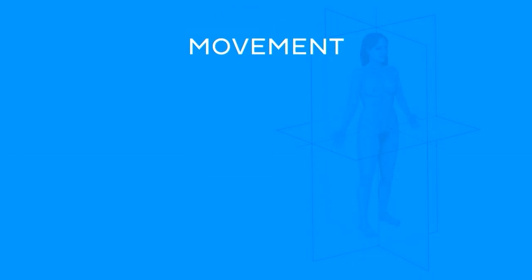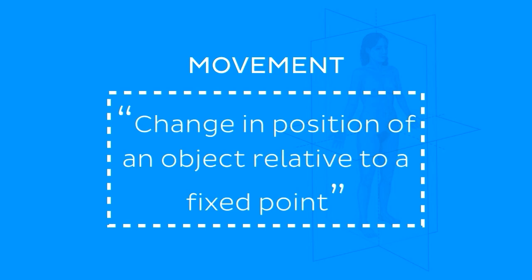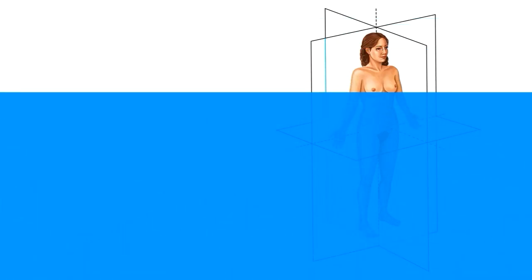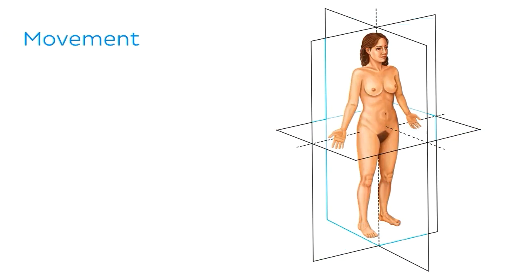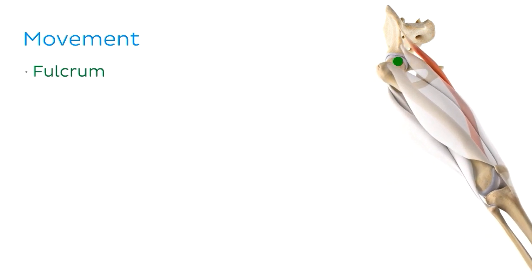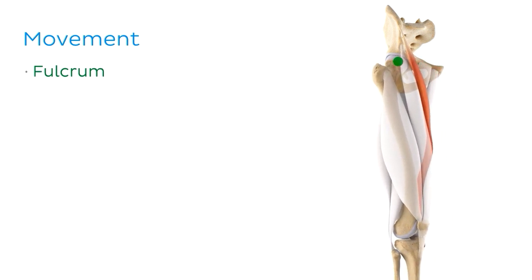Movement or motion is the change in position of an object relative to a fixed point — that's essentially the definition we have for movement. Almost all movement in the joints in your body is in some way rotational, meaning that the part that is further away is moving around a pivot point. That point is called the fulcrum.